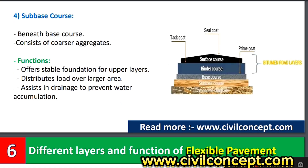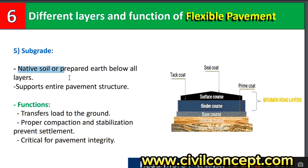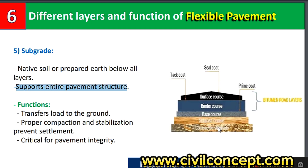Number five is the subgrade — the native soil or prepared earth below all layers, also known as natural soil. It supports the entire pavement structure and all pavement layers, helping traffic run over it. Its functions are to transfer load to the ground, prevent settlement of the foundation, and maintain pavement integrity, making all layers of the flexible pavement act as a single unit providing a stable environment for all types of traffic.